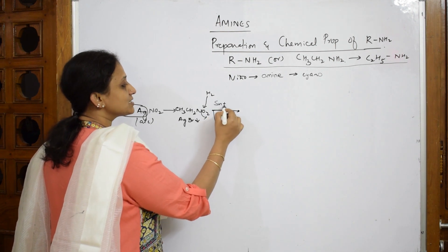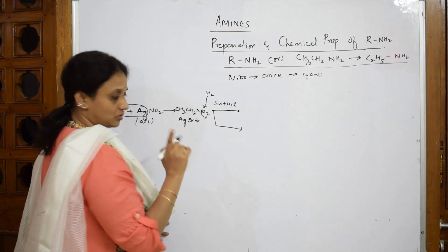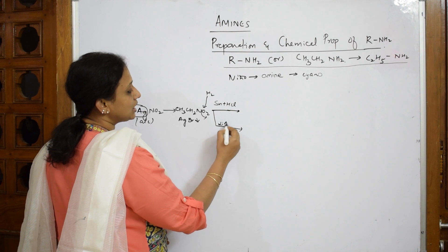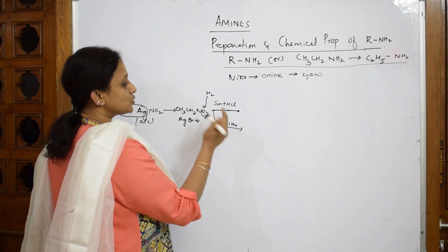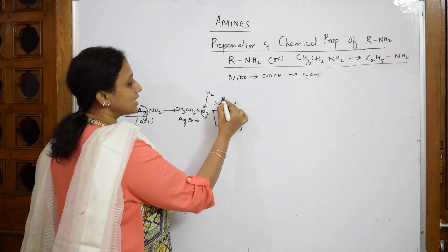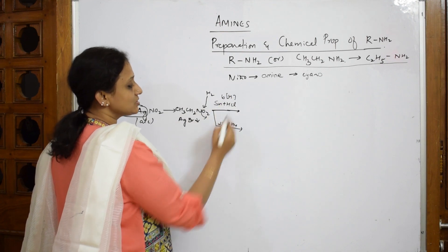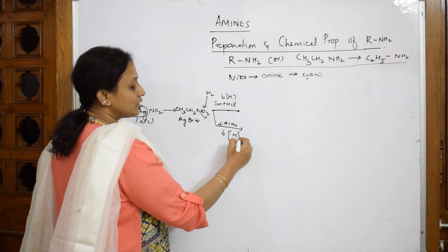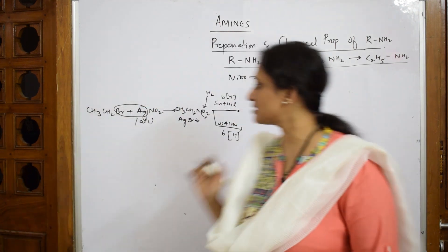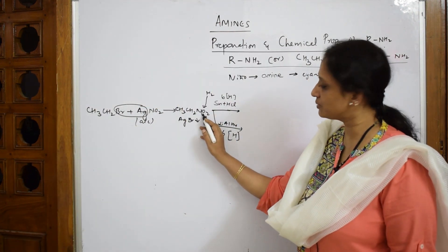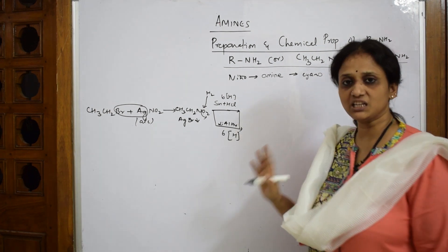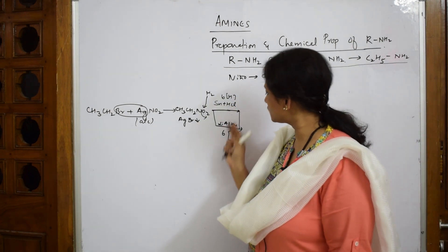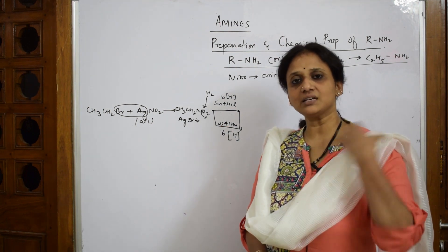Your reducing agents can be both - it can be Sn plus HCl, metal acid, or it can be lithium aluminium hydride. Both are reducing agents. What will these two do here? Try to add six hydrogens. I am writing six hydrogens directly. Why? Because for this I need two hydrogens.